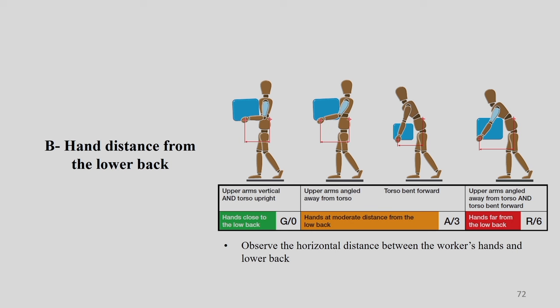For Factor B — hand distance from lower back — there is no purple color category. It means that any posture beyond red is considered impossible in an industrial scenario, so purple is not available for Factor B. If you are very close, your upper arm remains vertical, you are holding the object easily and the torso is upright. In this case, the hand is close to your lower back, color is green, and value is 0.